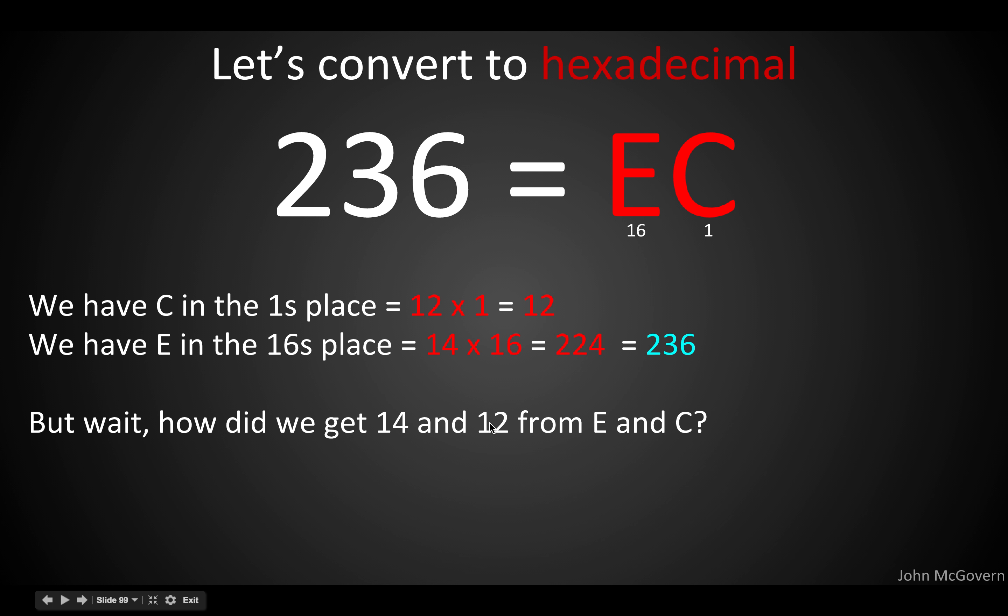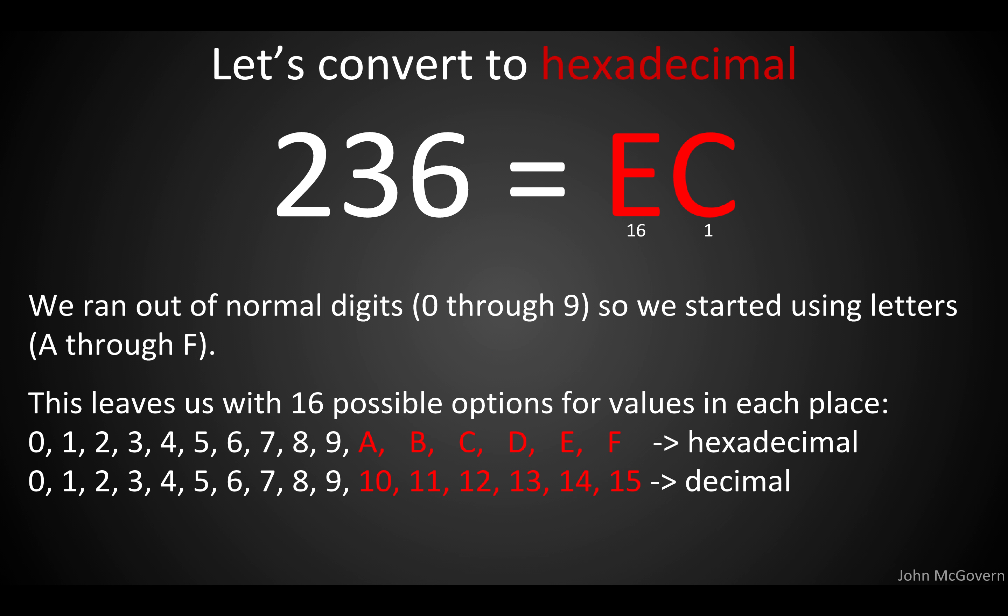But how did we get from 14 and 12 to E and C again? So, let's just check that out. So, in hexadecimal, we run out of normal digits, meaning 0, 1, 2, 3, 4, 5, 6, 7, 8, 9. But we want to have 16 values represented, and we only have 10 numbers. So, we borrow 6 letters. A, B, C, D, E, and F. So, down here, the numbers correspond to their number. You know, 1 is 1, 2 is 2, 3 is 3, so on and so forth. But then, after we run out of numbers, we use letters. So, A is 10, B is 11, C is 12, D is 13, E is 14, and F is 15.